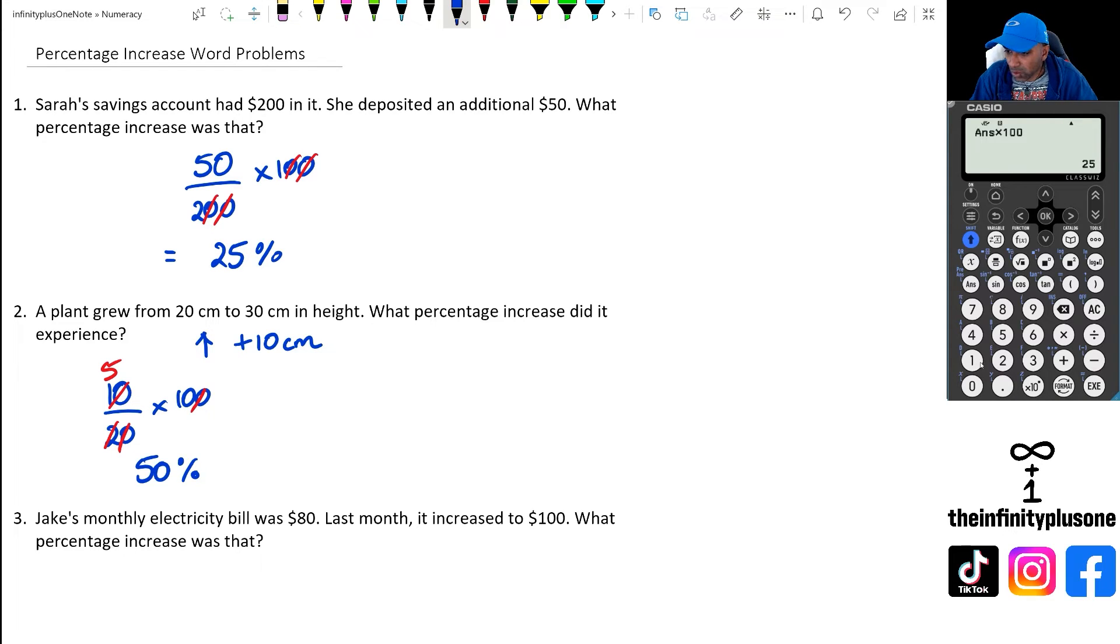So again, if you want to do this in the calculator, what you could do is go 10 out of 20 and multiply it with 100. That shows me that there's a 50% increase. Now, there is another way to do these types of questions.